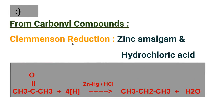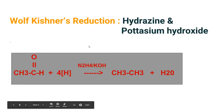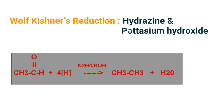Now, preparation of alkanes from carbonyl compounds. The first is Clemmensen reduction, where zinc amalgam and hydrochloric acid are used. This reaction is carried out in acidic medium, so the carbonyl compound — acetone or propanone — is converted into propane, with water as a byproduct. In the Wolff-Kishner reduction, hydrazine and potassium hydroxide are used, and the reaction is carried out in basic medium. The carbonyl compound is converted into alkane by addition of hydrogen, and water is produced as a byproduct. The mechanism of these two reactions is discussed in my previous video.